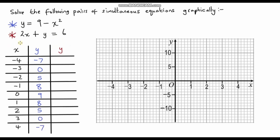Now for the linear equation in a maroon colour: when x equals negative four, negative four times two is negative eight, and to reach the y value we add fourteen to get six. When x equals negative three, this becomes negative six, so we add twelve to get six. Because it's linear it goes up or down by the same amount, giving values 10, 8, 6, 4, 2, 0, and negative two.